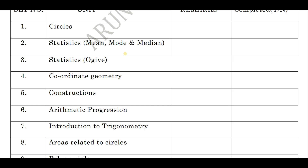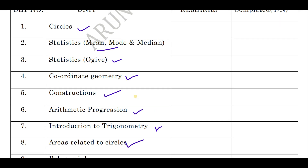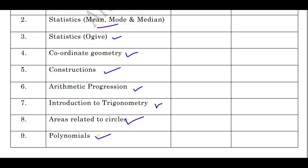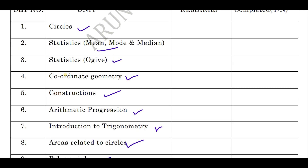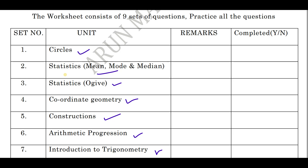These are the three mark questions from each unit you can expect for the board examination. The topics are: circles, statistics, OG, coordinate geometry, construction, AP, introduction to trigonometry, areas related to circle. I have already solved all these questions and the link for these videos is in the description. Do try to watch all those videos. I will not be solving them again now. I will be solving polynomials because I have not yet put the video on polynomials. Other than polynomials, everything has been solved and uploaded. Do join the Telegram group and watch all the complete videos — try to finish today itself.